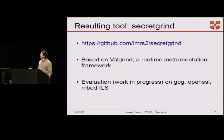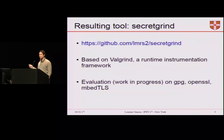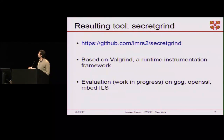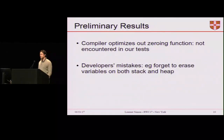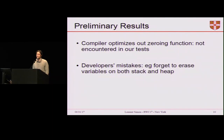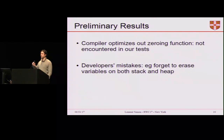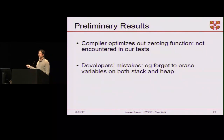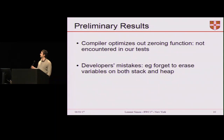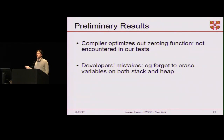We implemented all those ideas in a new tool called SecretGrind, available on GitHub. We've started evaluating three crypto libraries: GPG, OpenSSL, and EmbedTLS. Surprisingly, we haven't found any problems due to compiler optimizations. To be fair, all those libraries have a hardened version of the zeromem function precisely implemented to avoid compiler optimizations. However, if you ask compiler developers, they'll tell you this hardening is kind of a hack and not bulletproof. But it's reassuring to see that in practice this hack is currently working.